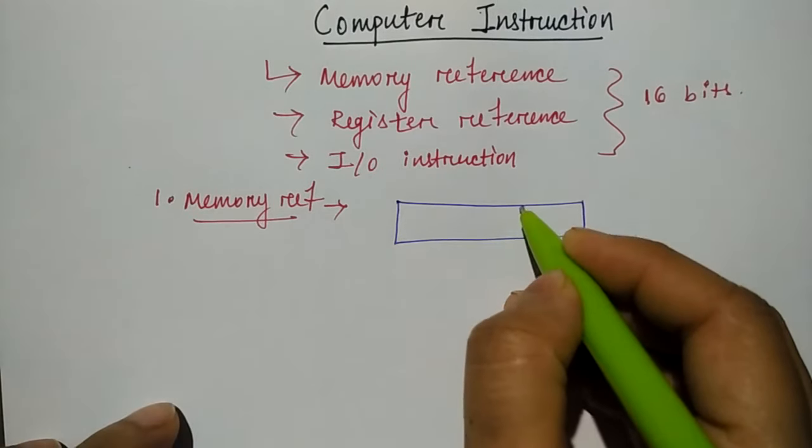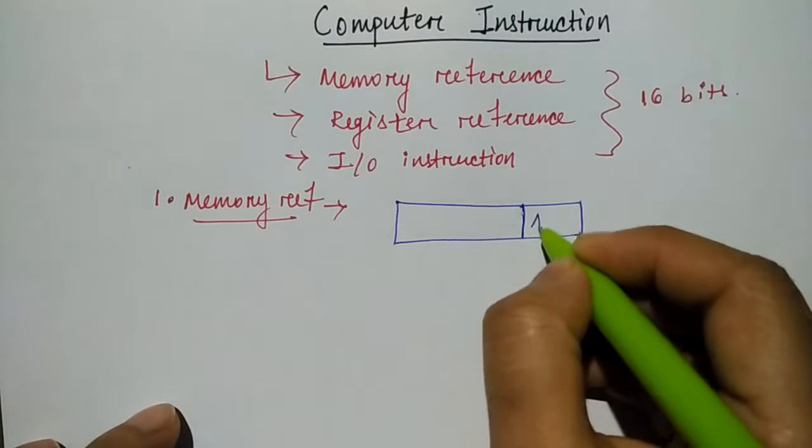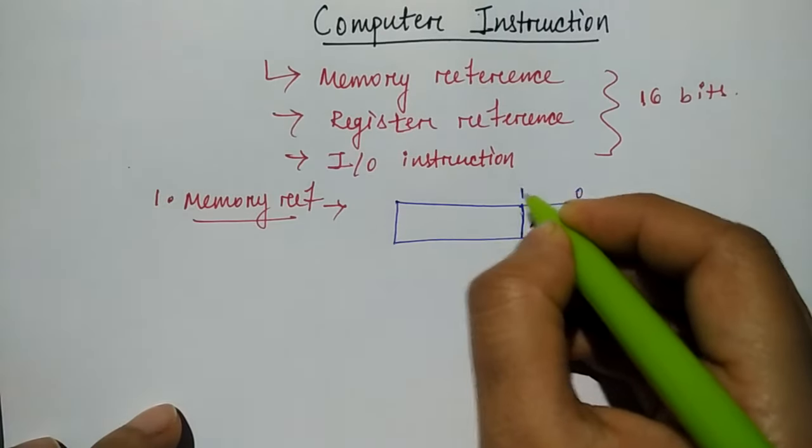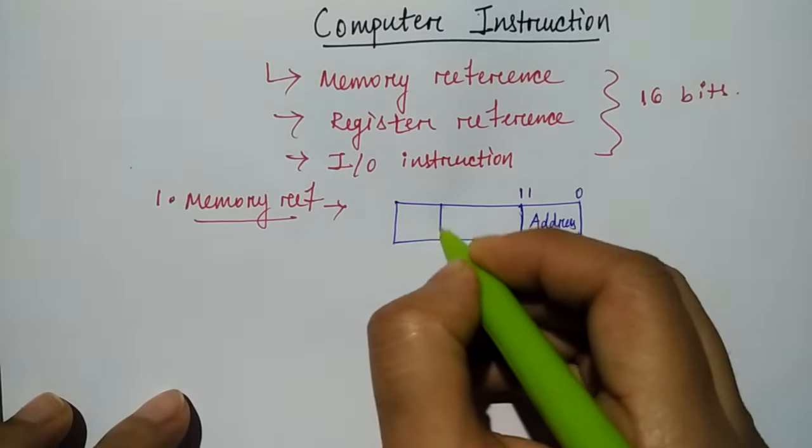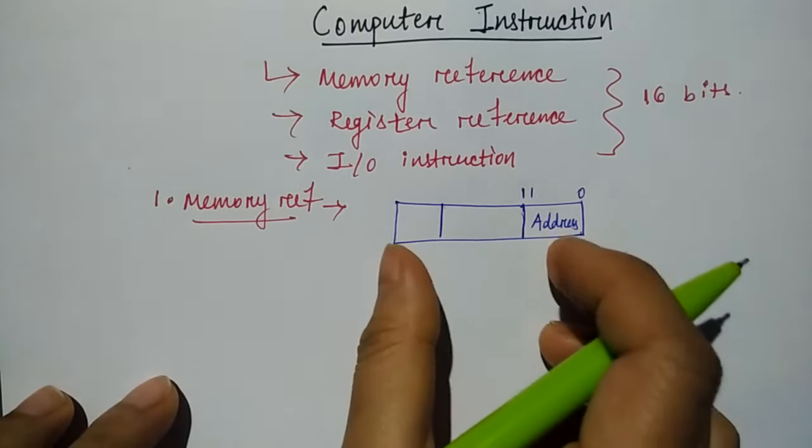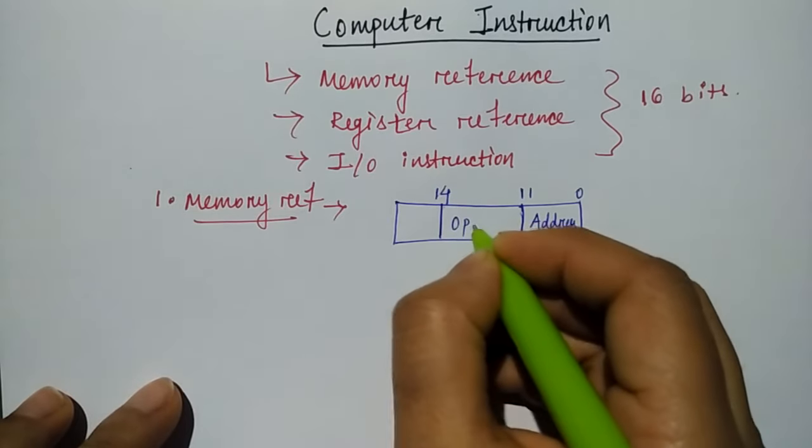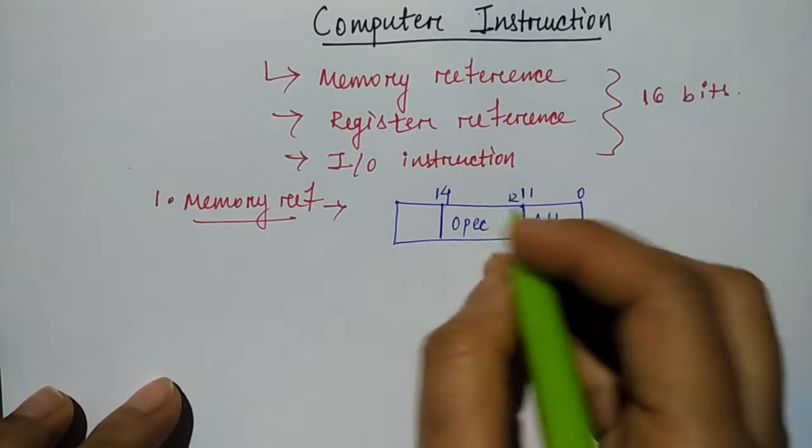I will tell you about the same thing here in detail. So normally there are three types. First and last part is for address. That is for 0 to 11 bit, 12 bit. After 4 bit, I have told you about the opcode. Opcode actually is for 3 bit, that is 12 to 14.